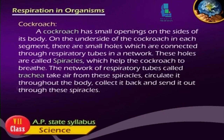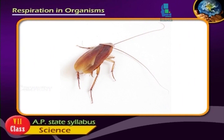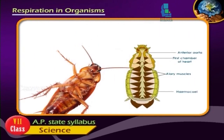Cockroach: A cockroach has small openings on the side of its body. On the outer side of the cockroach, in each segment, there are small holes which are connected through respiratory tubes in a network.